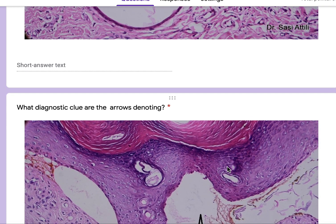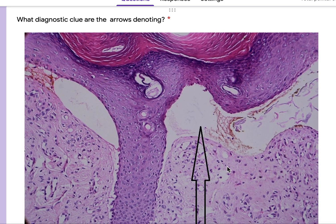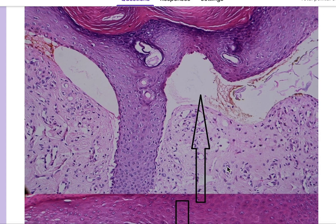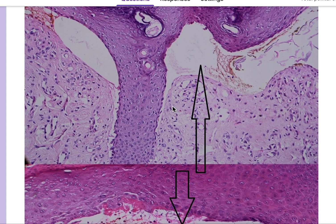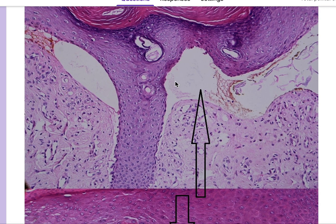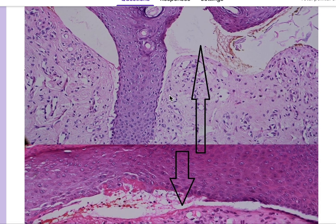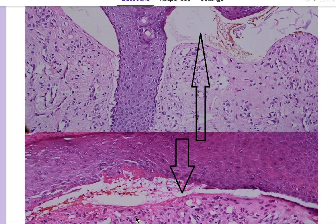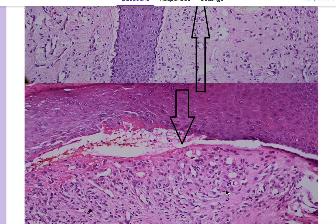What diagnostic clues are the arrows denoting? The diagnostic clue that the arrows denote is basically spaces — specifically a subepidermal cleft. You can see the subepidermal cleft here: this is the epidermis, this is the basal layer of the epidermis, and this is the papillary dermis. In between the papillary dermis and the basal layer you see a subepidermal cleft extending down the adnexa as well, which is also evident here.